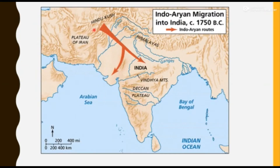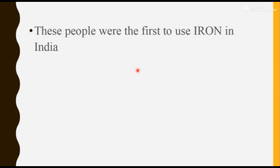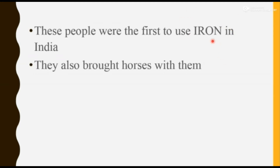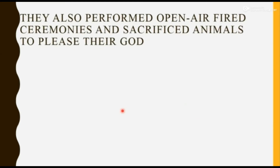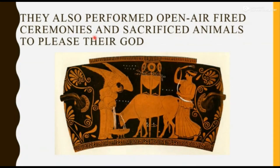We also came to know that Aryans were coming from the mountains of the Hindu Kush towards India. After the Indus Valley Civilization, they were the first ones to use iron in India. They cleared up jungles and cultivated more land for their agricultural purposes.